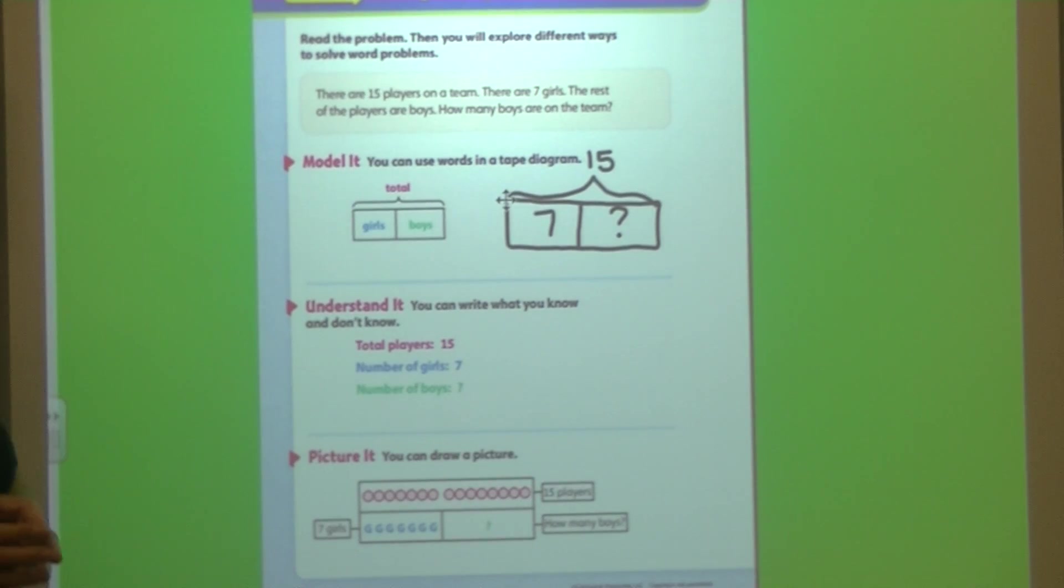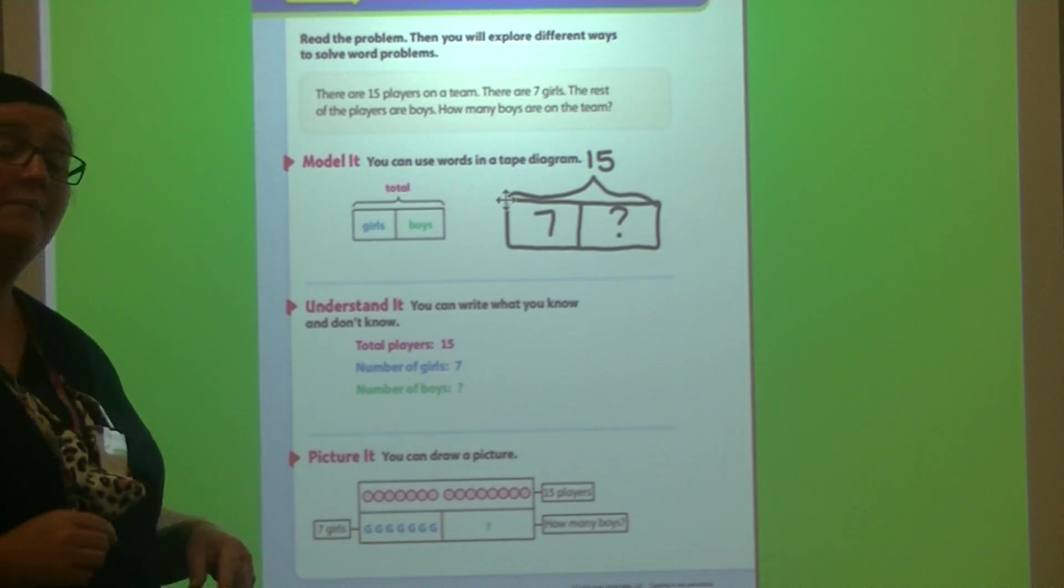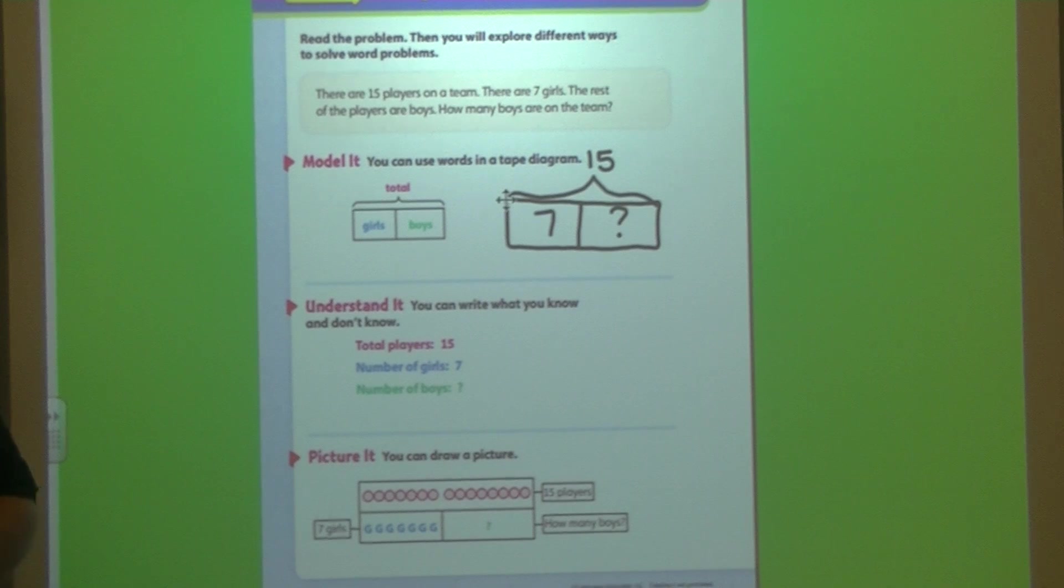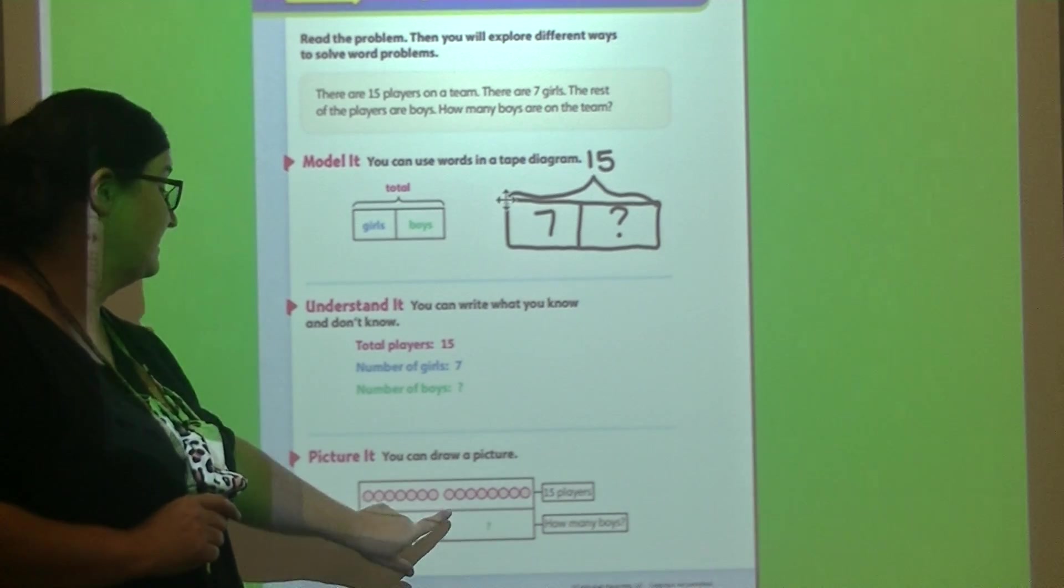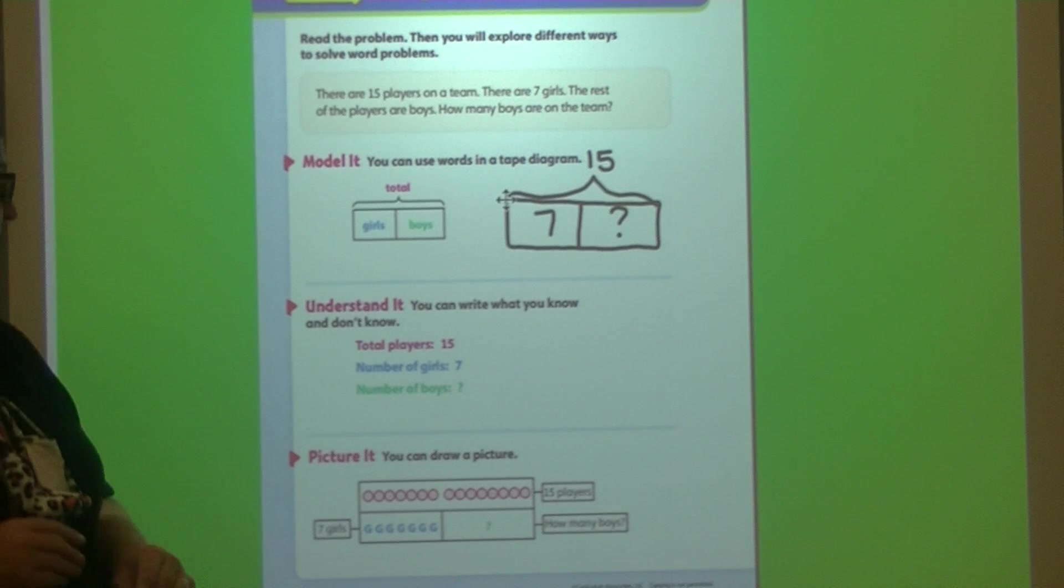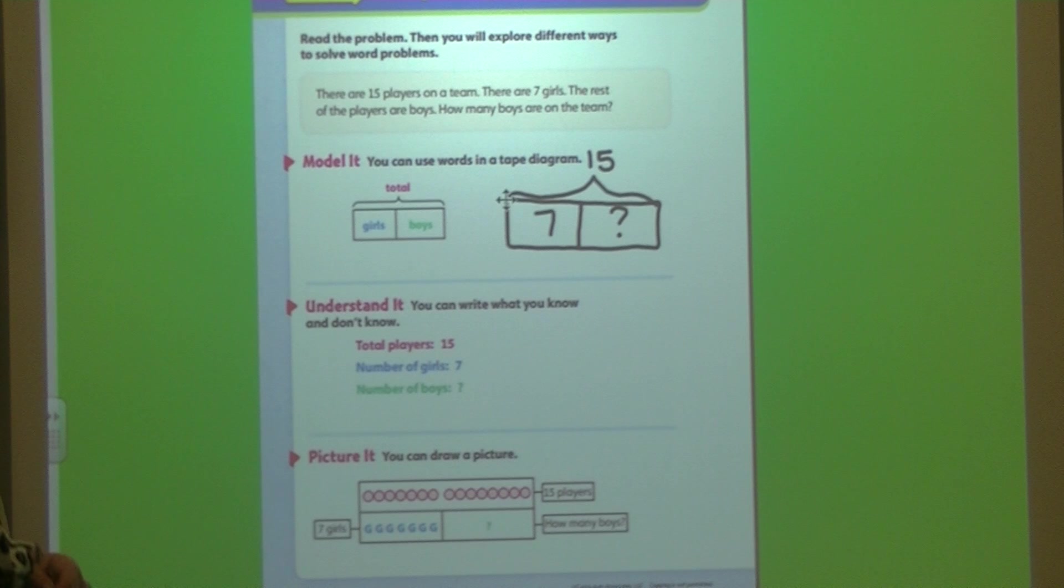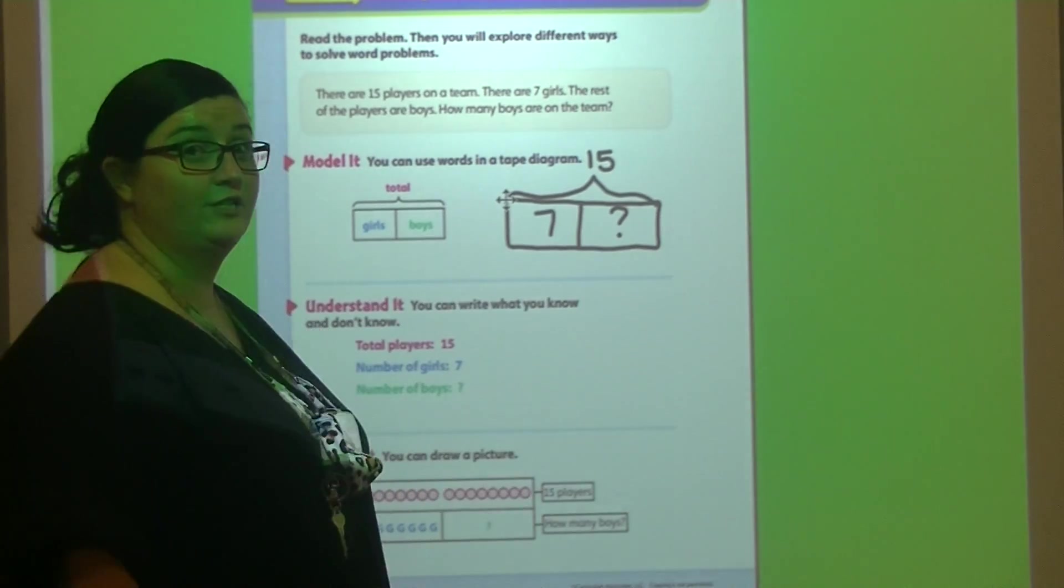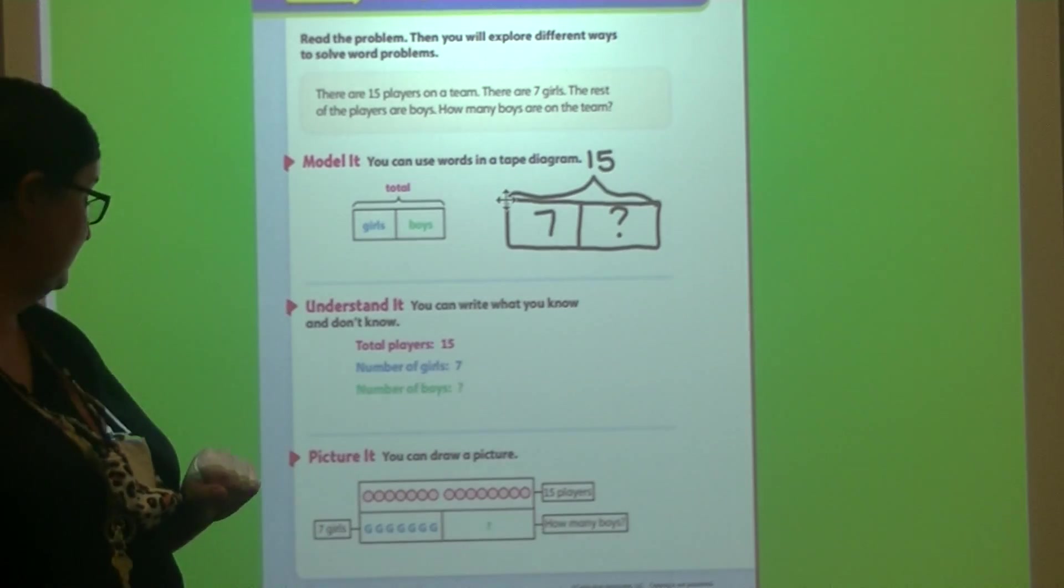There are how many girls? 7. So how many G's for girls should there be? Yes, there should be 7. Let's double check. 1, 2, 3, 4, 5, 6, 7. Now we need to know how many boys, don't we? That's a good way to visualize it. So either one of these models would work. We could draw the picture model, or we could use this one.